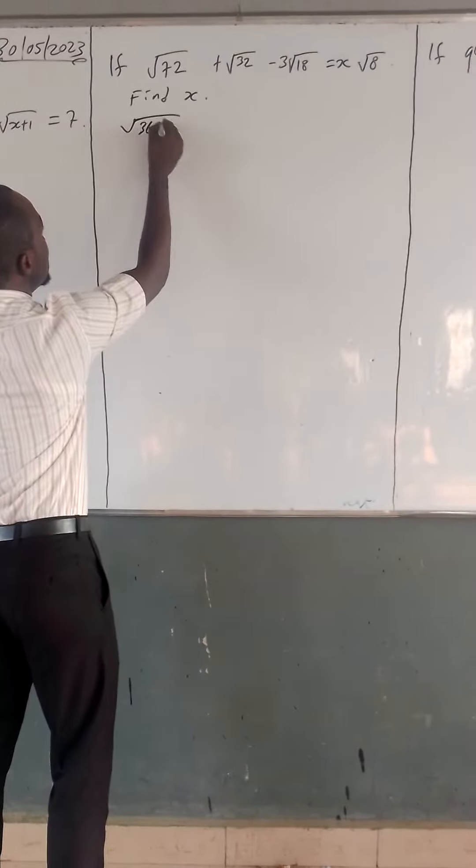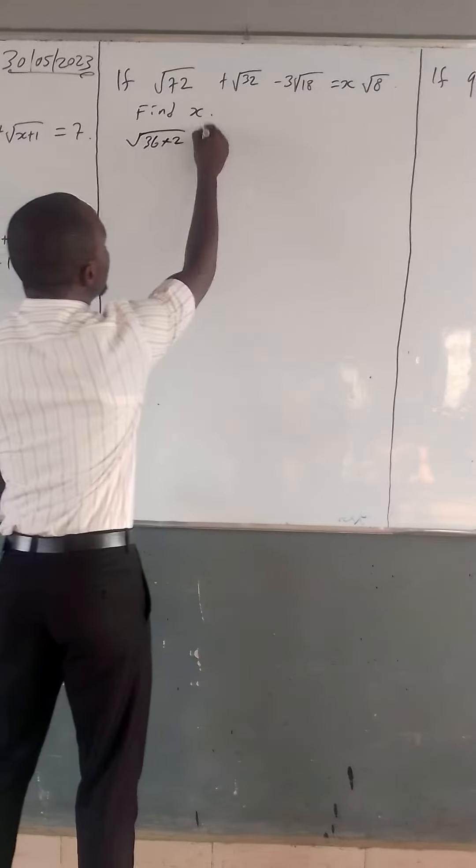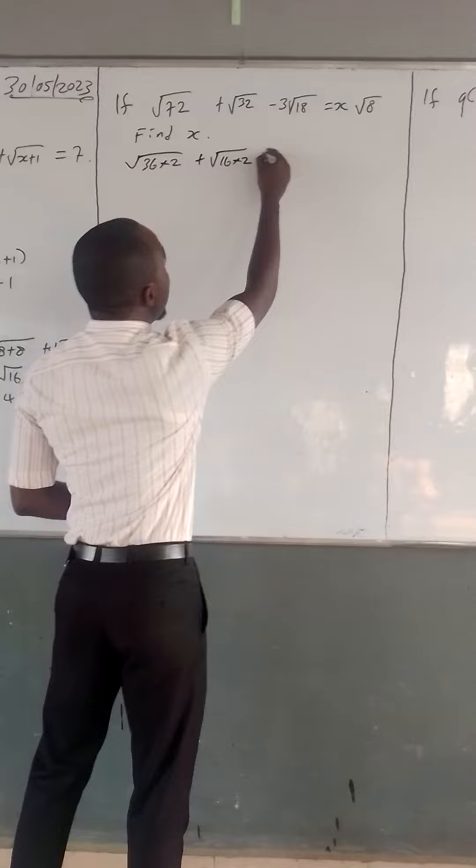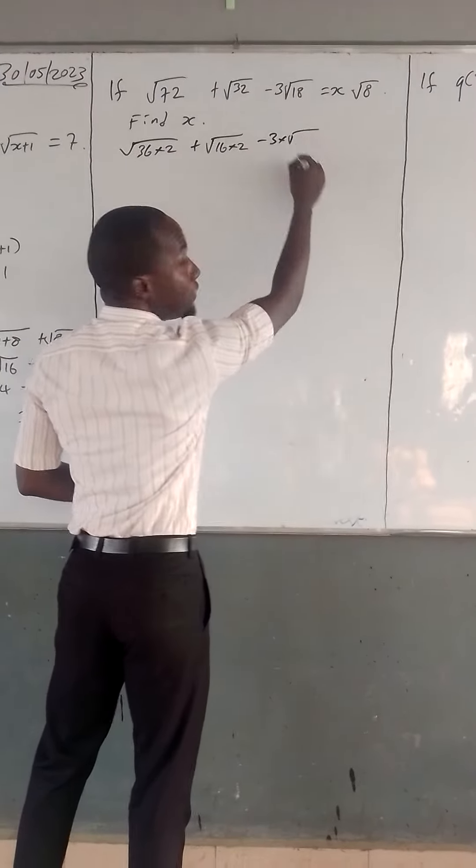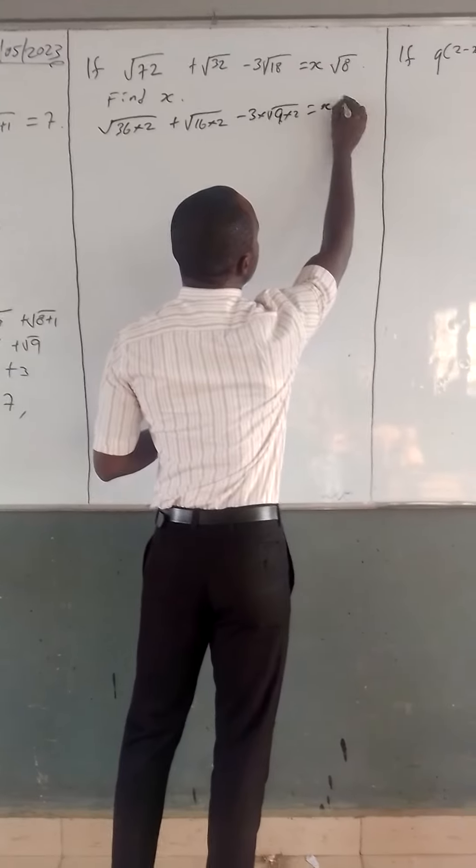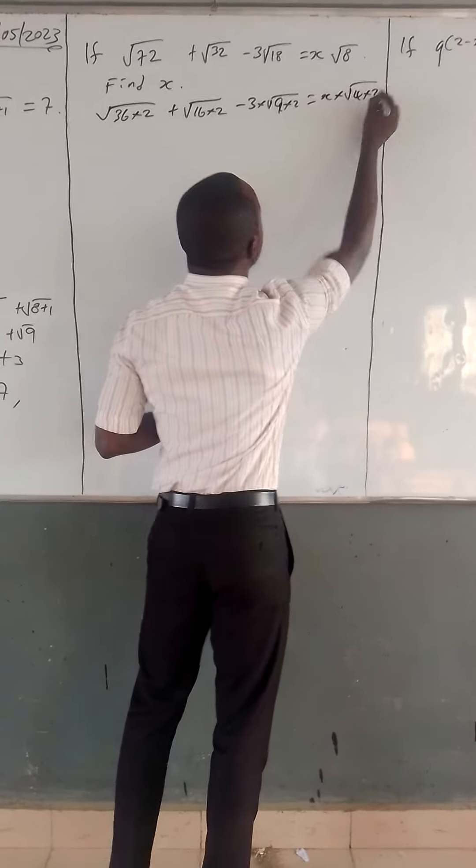Square root of 72 is 36 times 2. Square root of 32 is 16 times 2. Minus 3 times square root of 18 is 9 times 2, equals x times square root of 8 is 4 times 2.